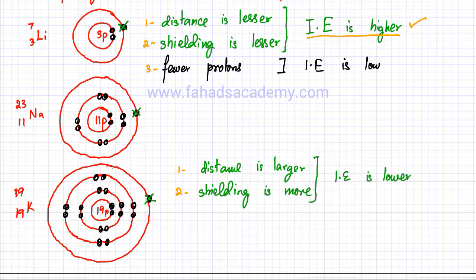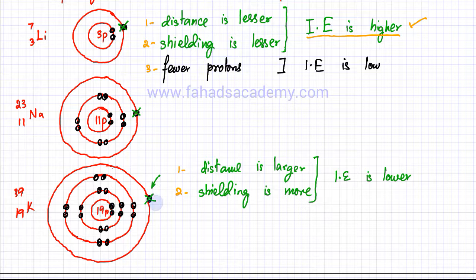The overall ionization energy for potassium is going to be lower because the electron is really far away from the nucleus — there isn't a lot of attraction. It's also shielded more, which again leads to lesser attraction. There are too many electrons between this electron and the nucleus blocking the attraction, so less energy would be required to remove it.